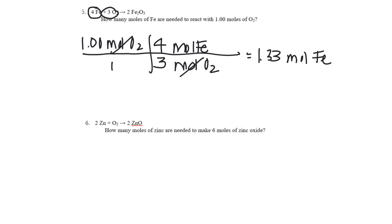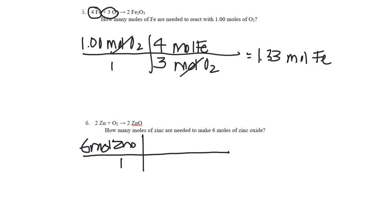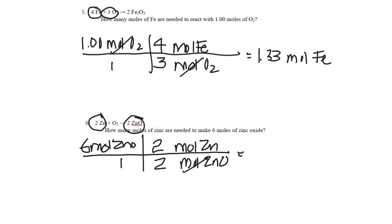Question six: how many moles of zinc are needed to make six moles of zinc oxide? I want to go from zinc oxide to zinc. Start with six moles of zinc oxide over one. Moles of zinc oxide comes down; I want to get to moles of zinc. In the balanced equation, there's a two next to zinc and a two next to zinc oxide. Units cancel — six moles of zinc are needed.